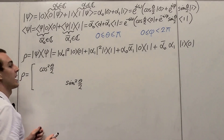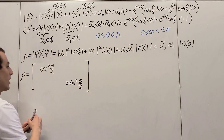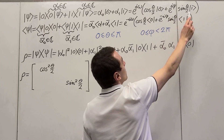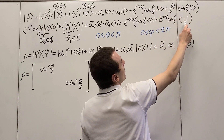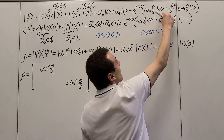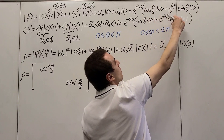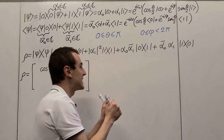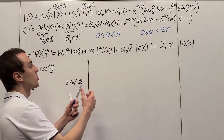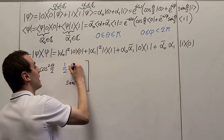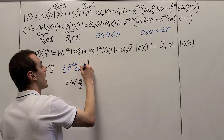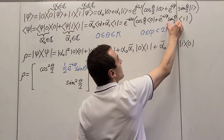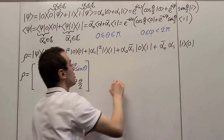Now let's consider the off-diagonal terms — I'll write them in a different color so we can tell them apart clearly. These come from the cross terms when we multiply out. Considering the zero-one term, it has a minus sign in the relative phase factor and is proportional to cosine theta on two times sine theta on two. We can use a trigonometric identity to combine these into a single sine, at the cost of a factor of one half, giving us e to the minus i phi times sine theta — note it is sine theta, not theta on two.